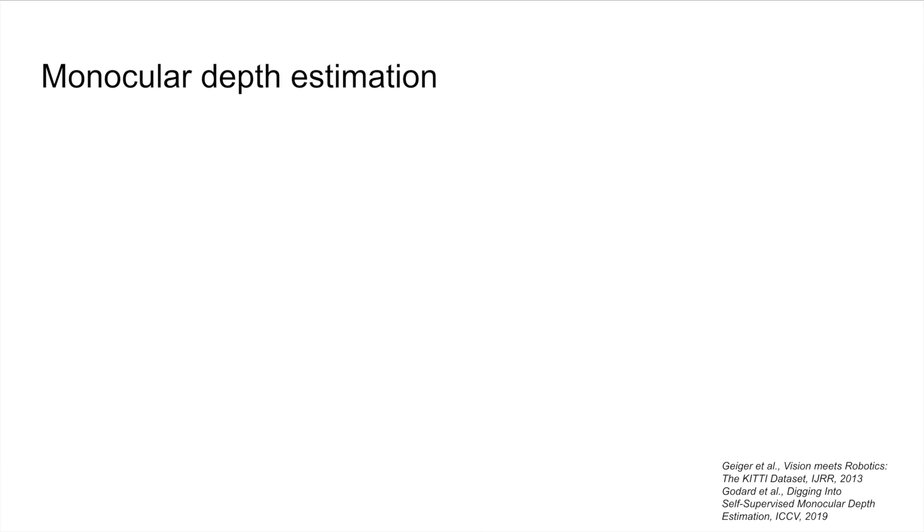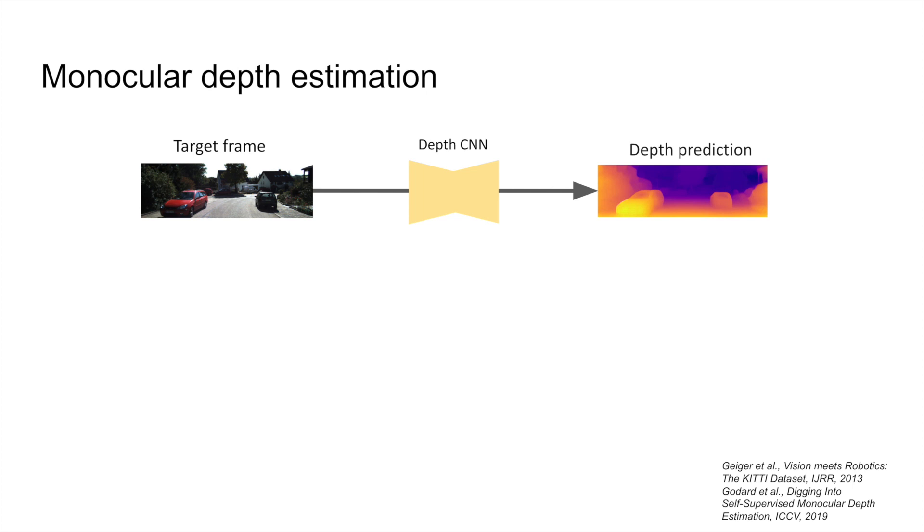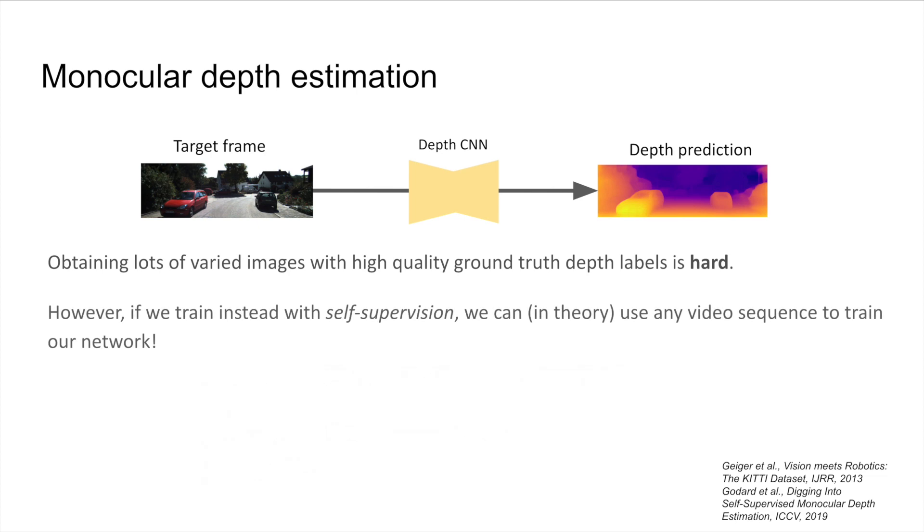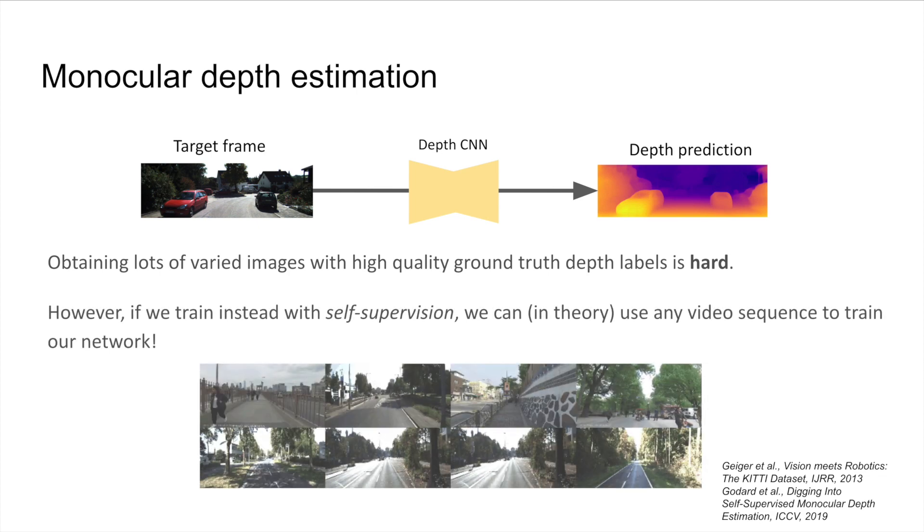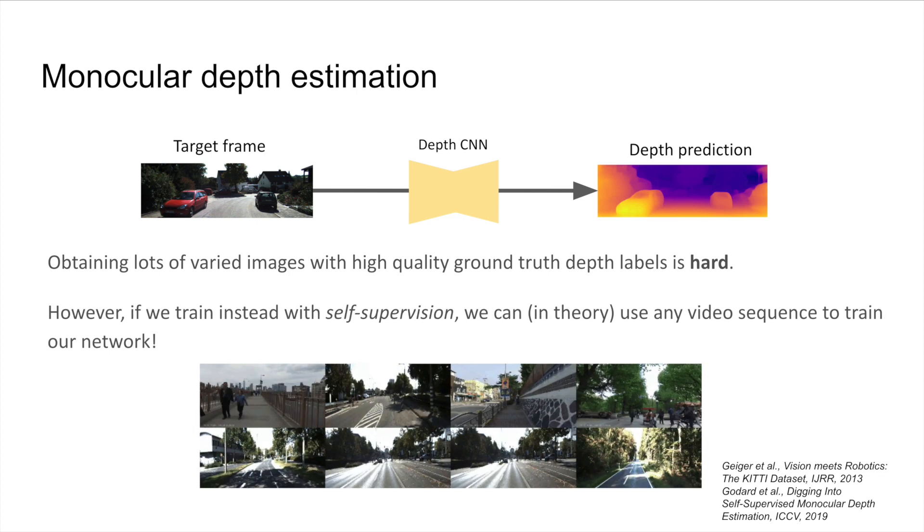Monocular depth estimation is the task of taking an RGB image as input and outputting a per-pixel depth map. Modern methods make use of deep convolutional networks, and thus require a high number of examples to train. However, obtaining accurate ground truth labels is difficult, and as such there has been a focus on self-supervised methods in the community, allowing for training from monocular video alone.